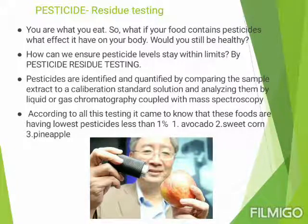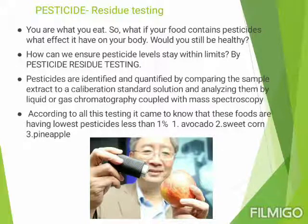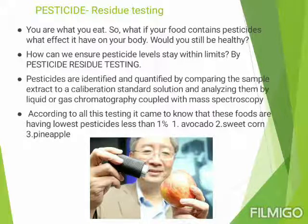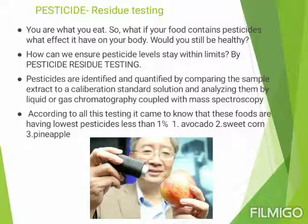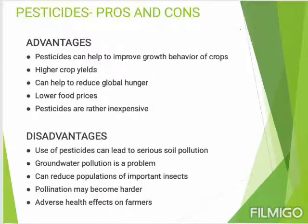Now for pesticide residue testing: you are what you eat — so if your food contains pesticides, what effect will it have on your body? How can you ensure pesticide levels stay within limits? Through pesticide residue testing, pesticides are identified and quantified by comparing sample extracts to calibration standard solutions and analyzing by liquid or gas chromatography coupled with mass spectroscopy. Testing has noted that some foods have the lowest pesticide levels — less than one percent — for example, avocado, sweet corn, and pineapple.